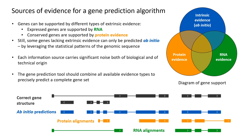The common information sources used in gene prediction can be divided into three categories. First, transcript evidence, which supports expressed genes. Second, protein evidence, which supports evolutionary conserved genes. And finally, some genes may lack both transcript and protein evidence, and they can only be predicted ab initio, based on the statistical patterns of the genomic sequence itself.